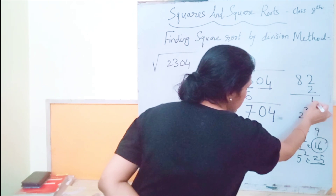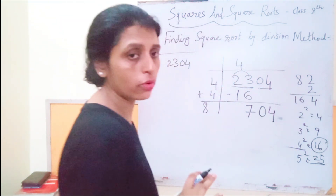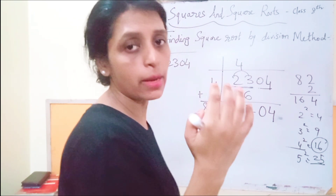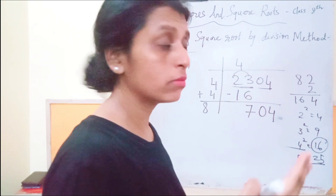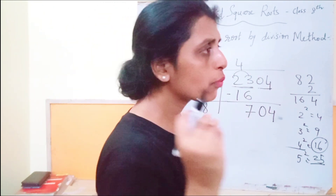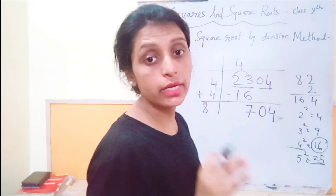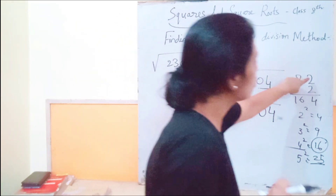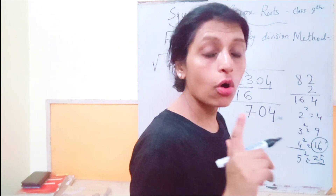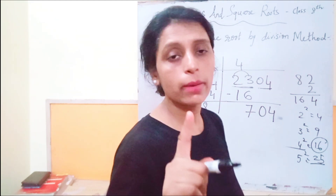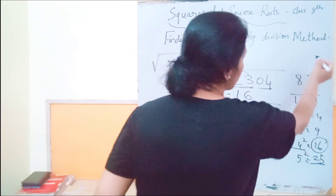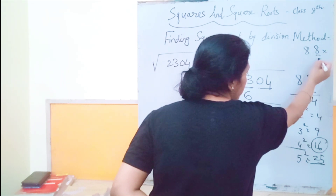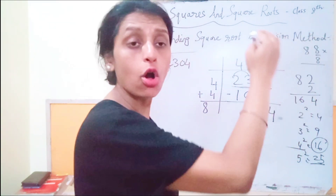Let's see — if we try two, 82 times 2 = 164, that's too small. We need to think about which number's square has 4 in the ones place. Two squared has 4 in the ones place, and eight squared also has 4 in the ones place. So let's try placing 8 next to 8, giving us 88.